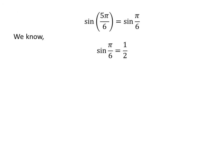We know sine of pi upon 6 is equal to half. So sine of 5 times pi upon 6 is equal to half.